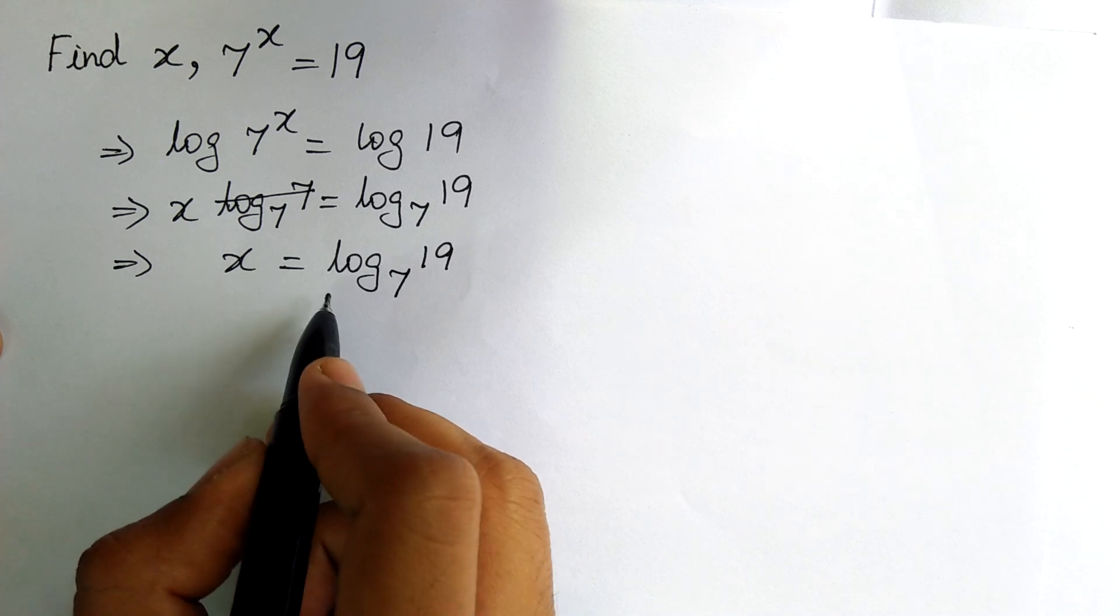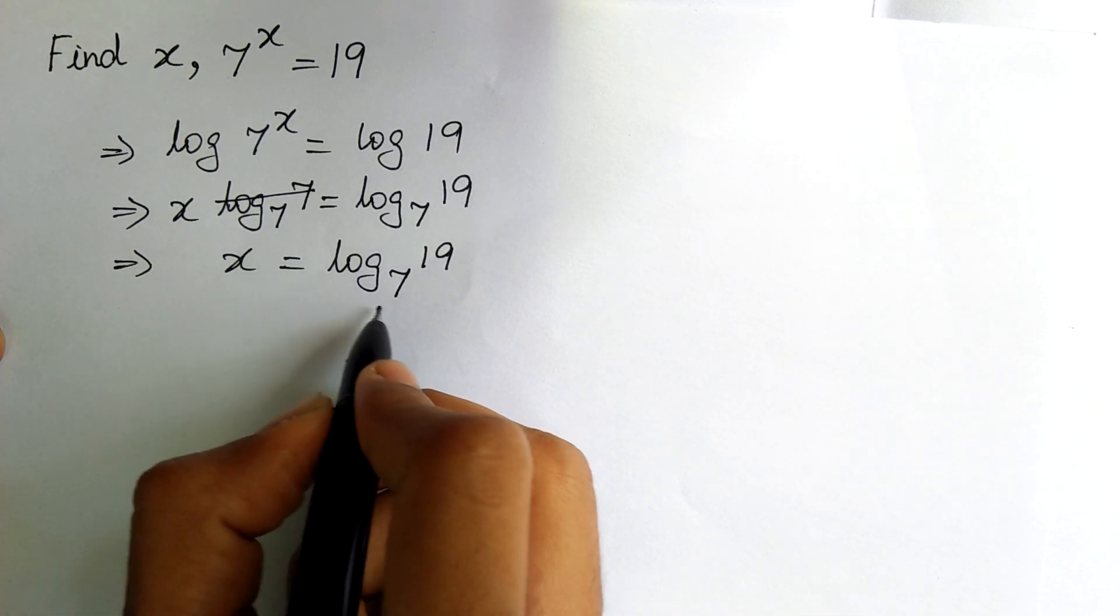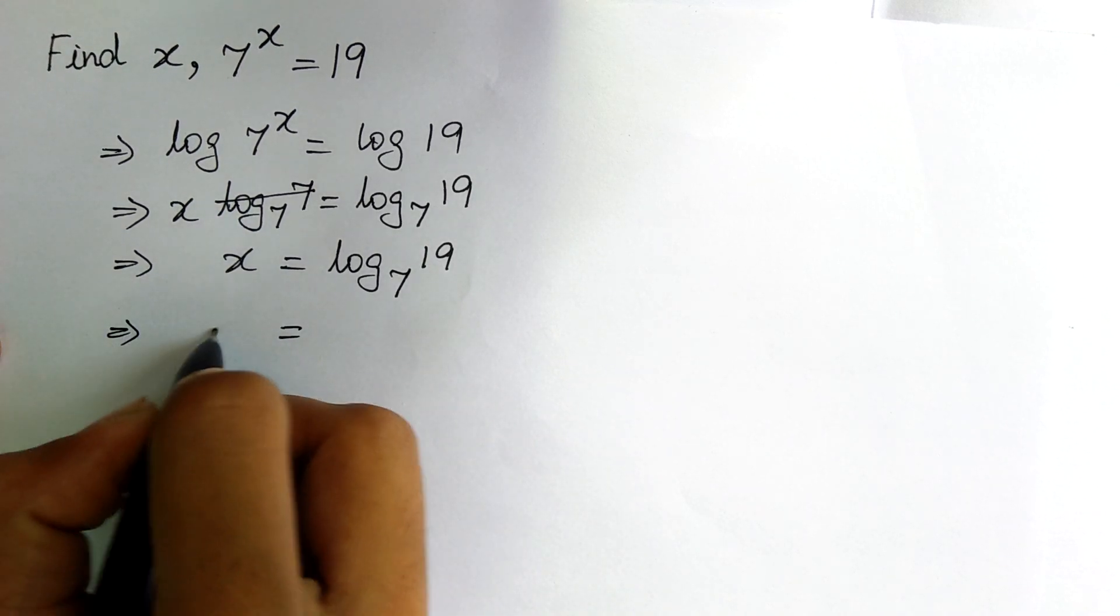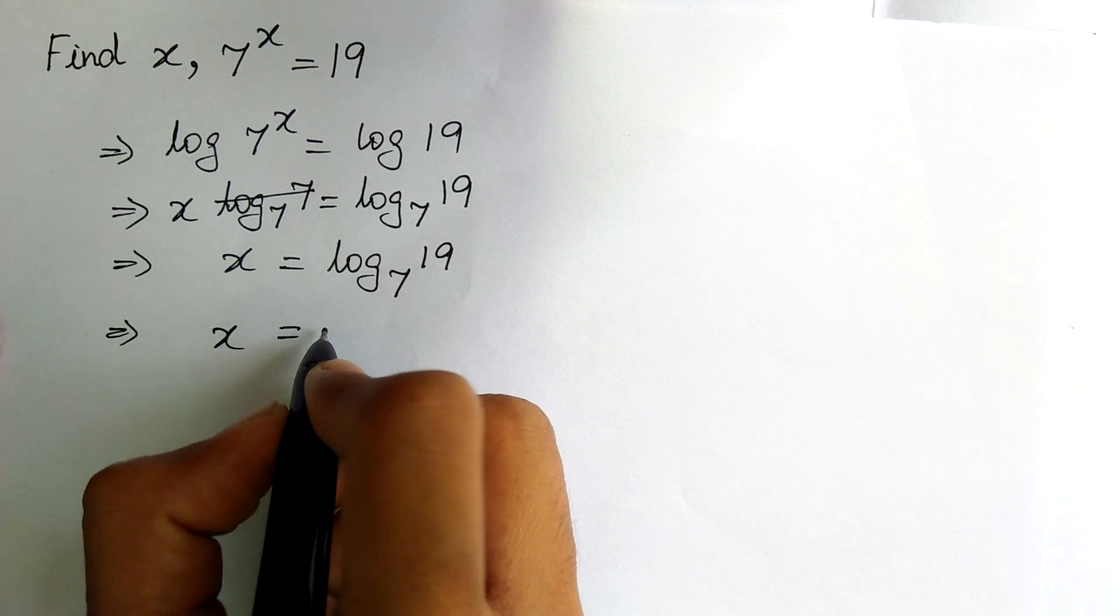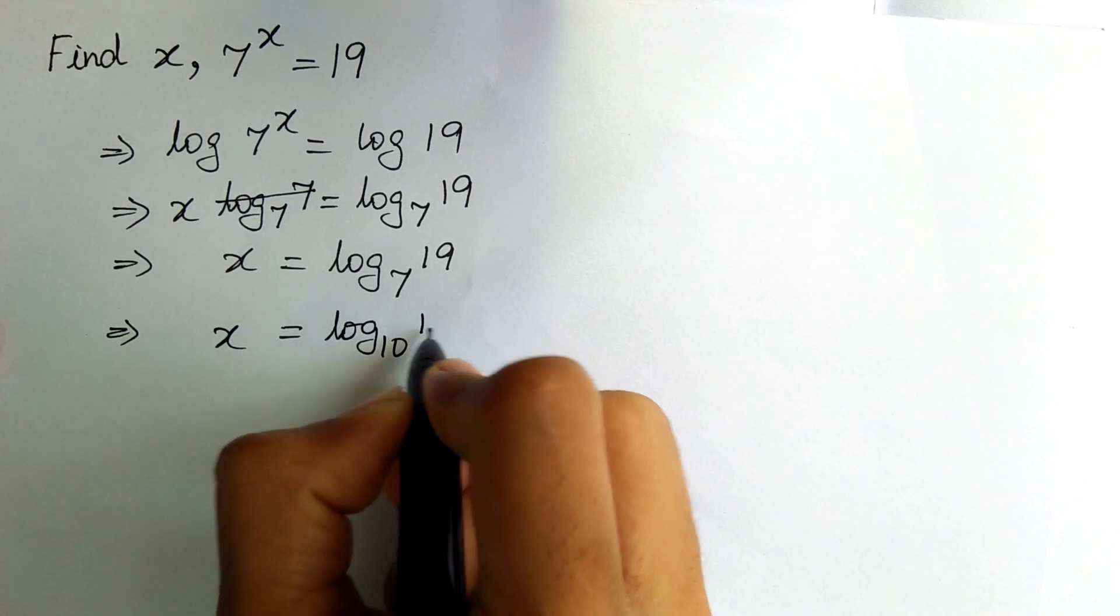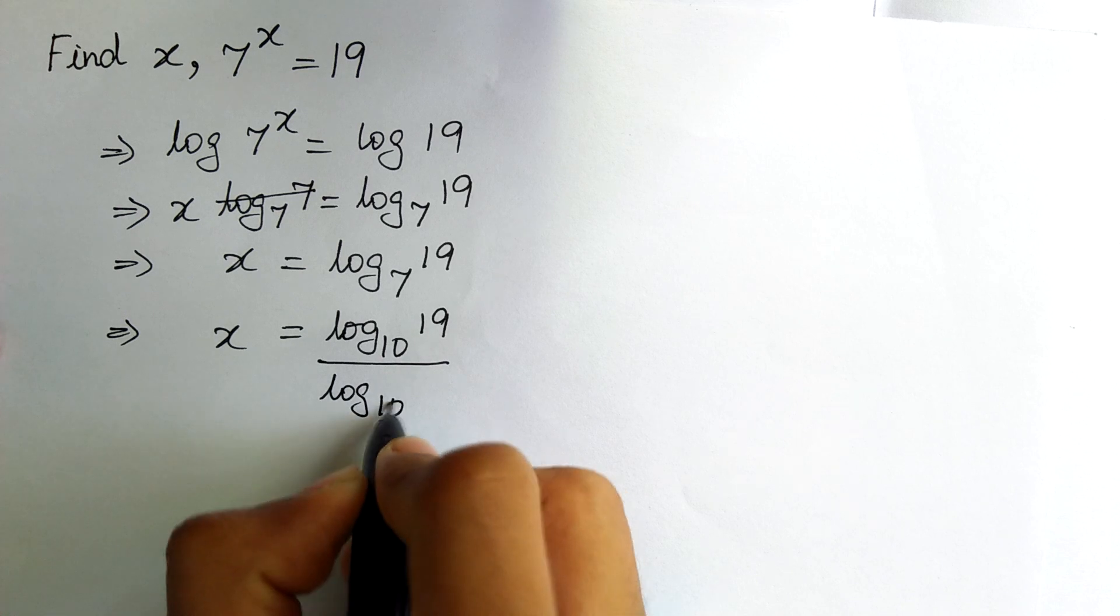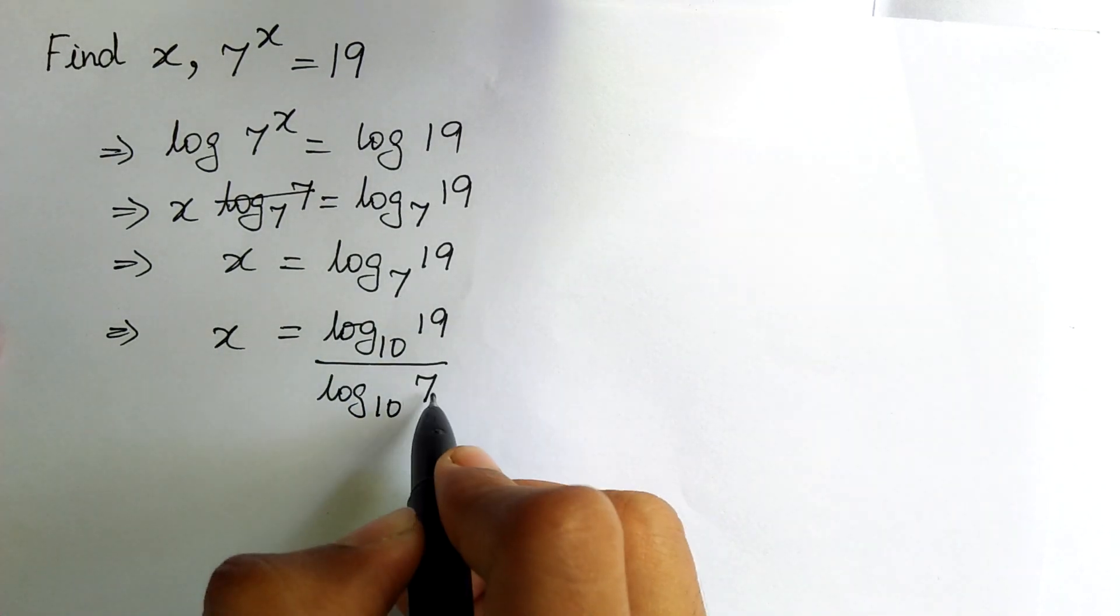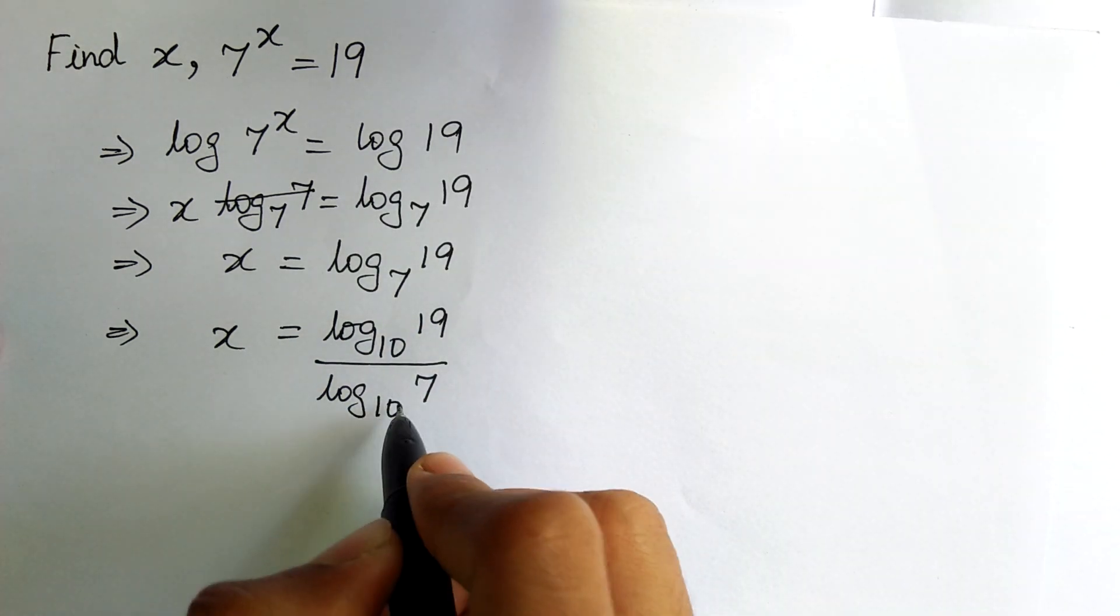Here, for calculation purposes, let us change the base to 10. Here, the base is 7. So, let us change the base to 10. To change it to 10, we must write that log to the base 10 of 19 divided by log to the base 10 of 7. So, 7 comes here and the 19 comes here. We have changed the base to 10.